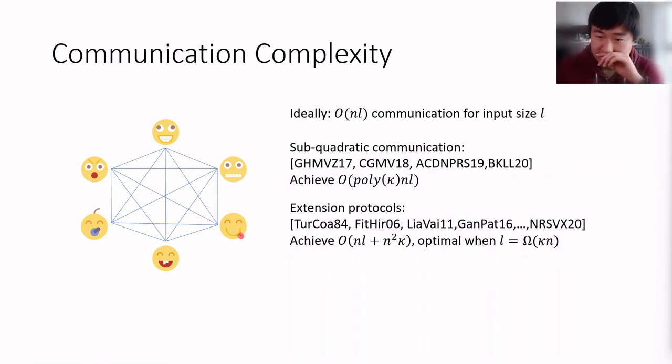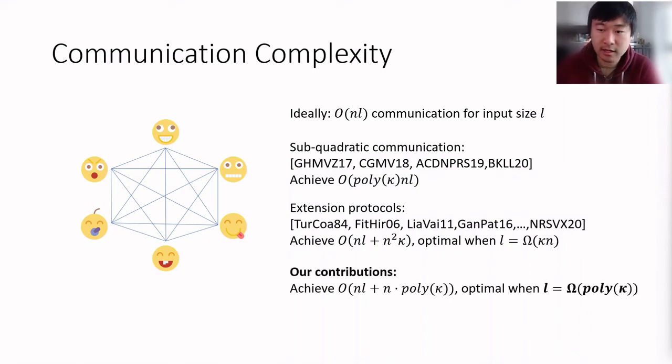So in this work, we ask whether we can further improve the communication complexity of the protocols that we have nowadays. And we answer in the affirmative. So our protocol achieves communication n times l plus n times poly of kappa. What does this mean? This means that our protocol is optimal for an input range that is of size poly of kappa. In particular, we can think about the input range as being sublinear in the number of parties.